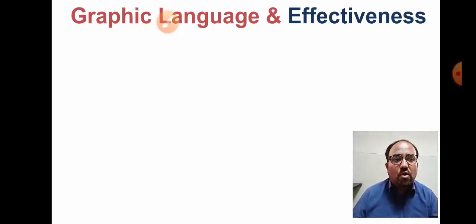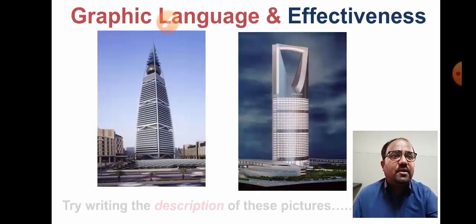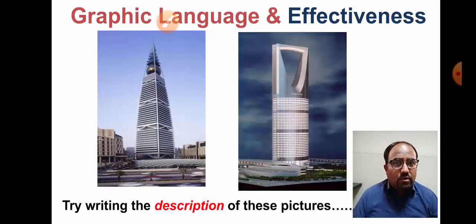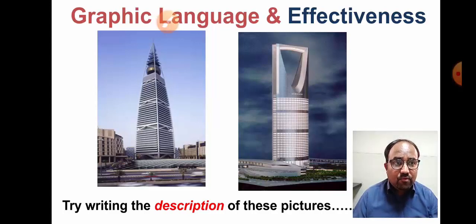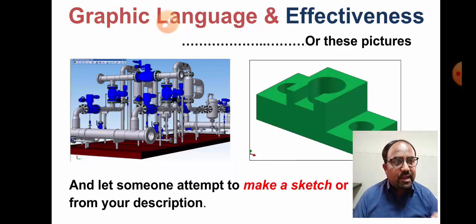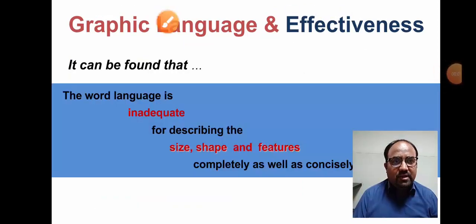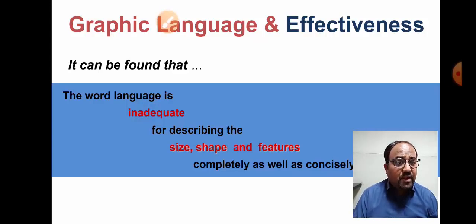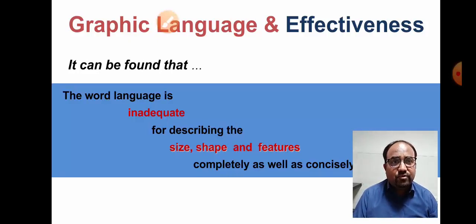Engineering graphics is one type of language for all engineers. Graphical language can be understood as the world language. It represents ideas with dimensions. The world language is inadequate for describing size, shape, and features completely and concisely — that is why any graphical representation on paper with actual size, shape, features, and dimensions is used.